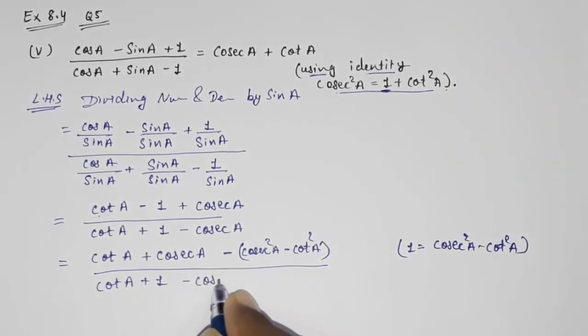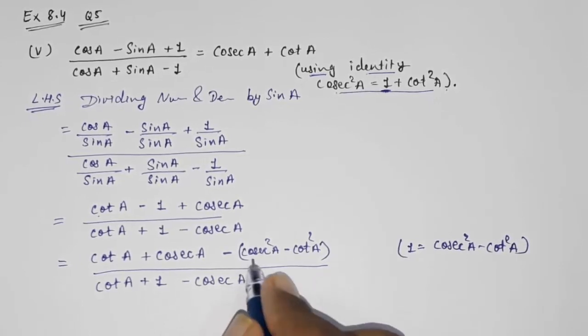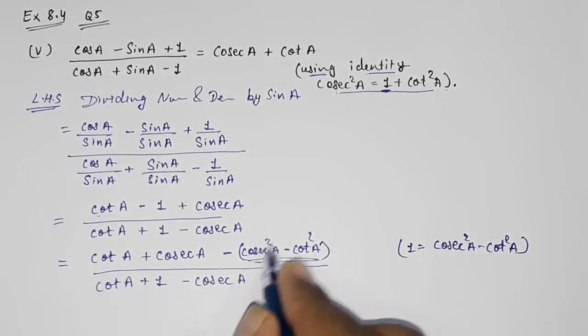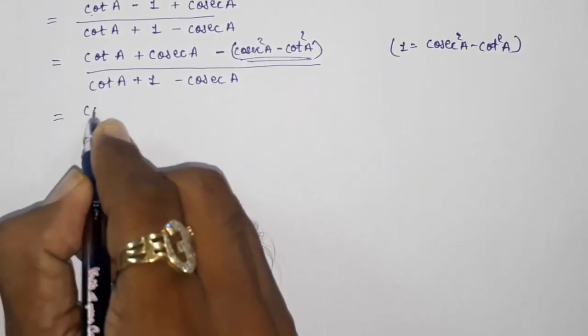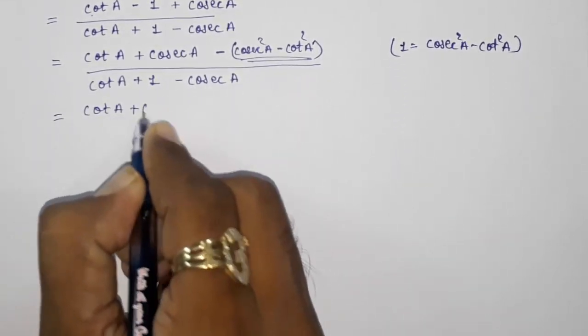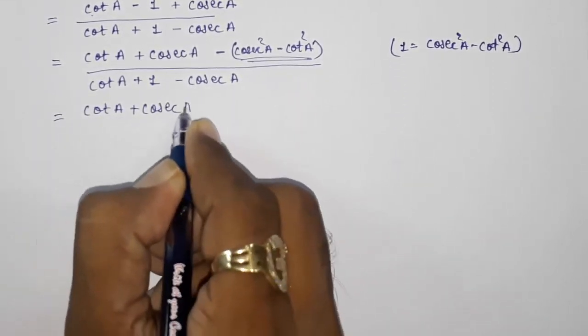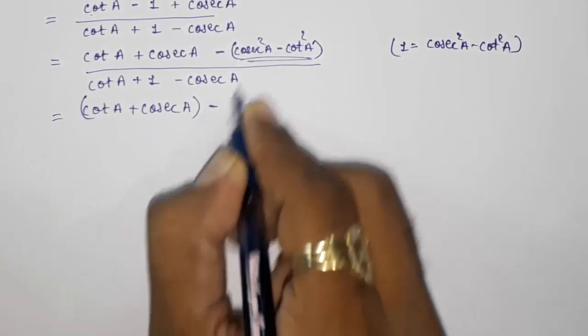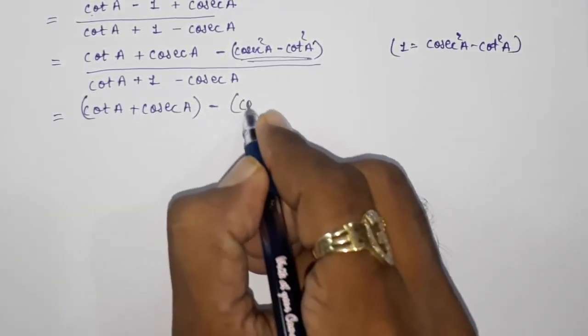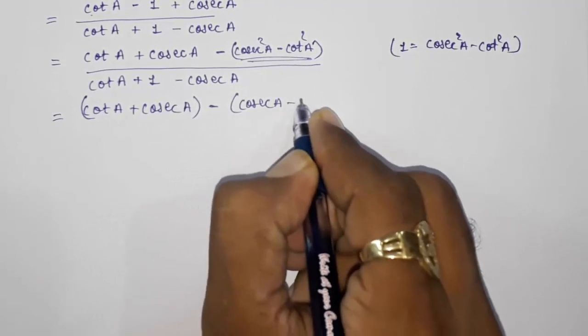Now I can factorize this, this is A² minus B², so on the place of that look here: (cot A plus cosec A) minus this will become (cosec A minus cot A).